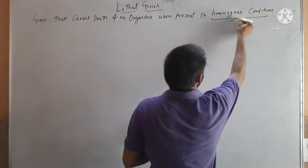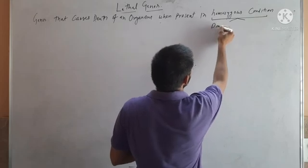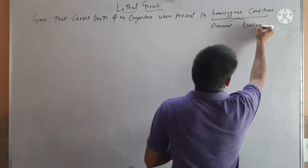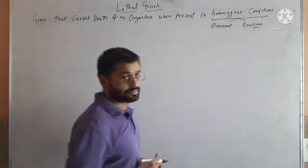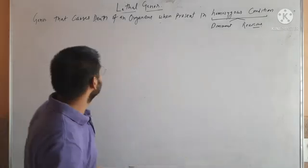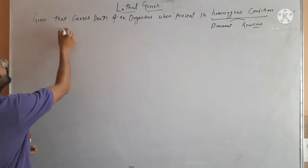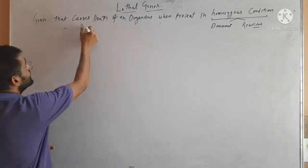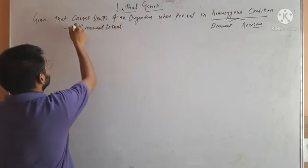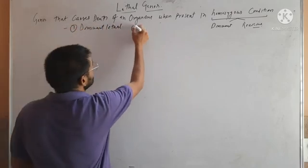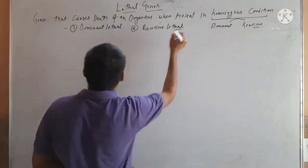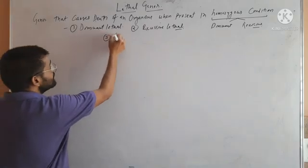This homozygous condition may be dominant homozygous or may be recessive homozygous. Lethal genes or lethal alleles are categorized mainly into three types: dominant lethal, recessive lethal, and the third one is conditional lethal.